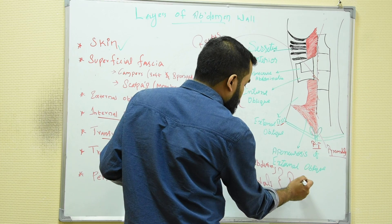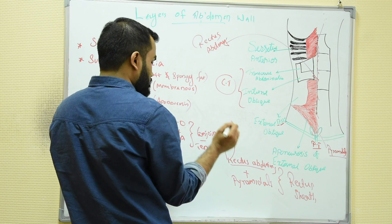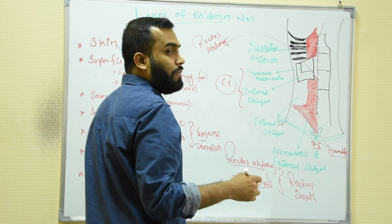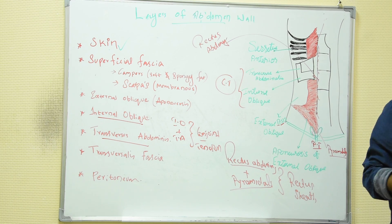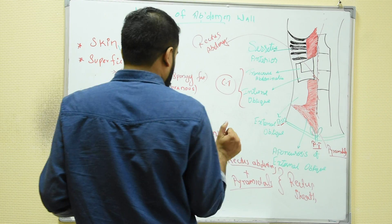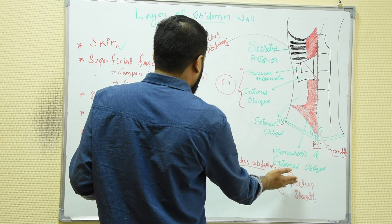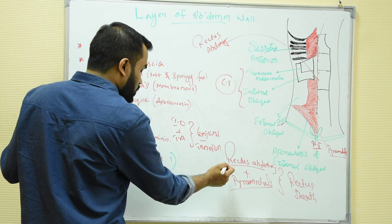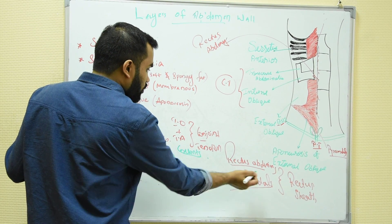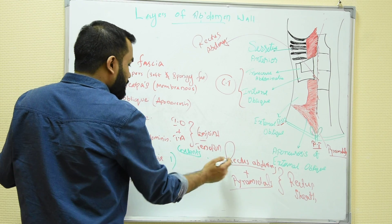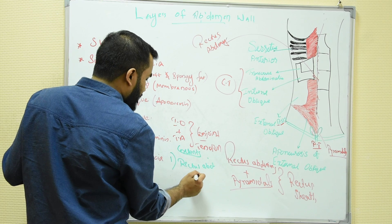The rectus abdominis plus pyramidalis together form a sheath called the rectus sheath. So the rectus sheath is formed by the combination of rectus abdominis and pyramidalis muscle. Now they will ask you: what are the contents of the rectus sheath?